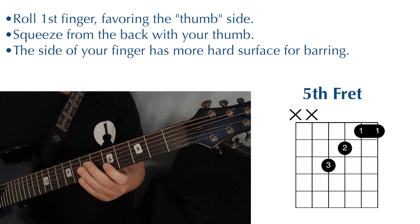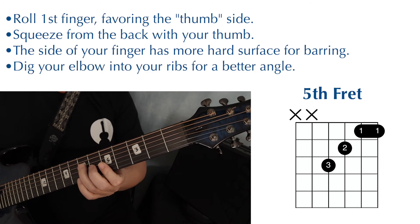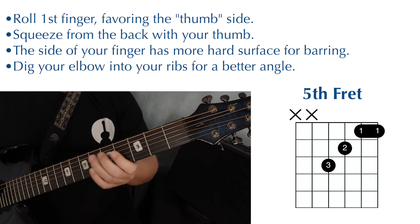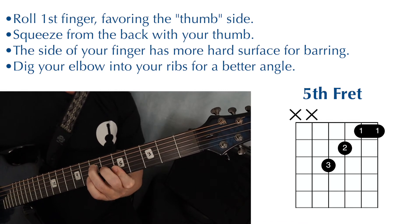Now don't try playing on the very, very edge of your finger. That's going to be a little too difficult. Just try to favor the side a little bit instead of playing directly on the front. And if you have trouble rolling your finger, digging your elbow into your ribs might get you a better angle.